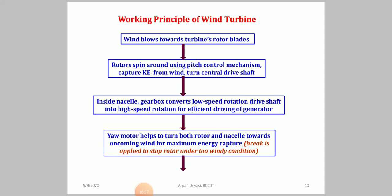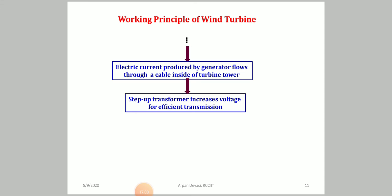If wind conditions are like a storm or gale, a brake must be applied to stop the rotor and prevent mechanical damage — this is why the Beaufort number plays a crucial role in operation decisions. Once the yaw motor has oriented the turbine, the generator produces electric current via a cable inside the turbine tower. Since the current magnitude is lower, a step-up transformer is required to increase the voltage for efficient transmission. Together, these steps describe the complete working principle of a wind turbine.